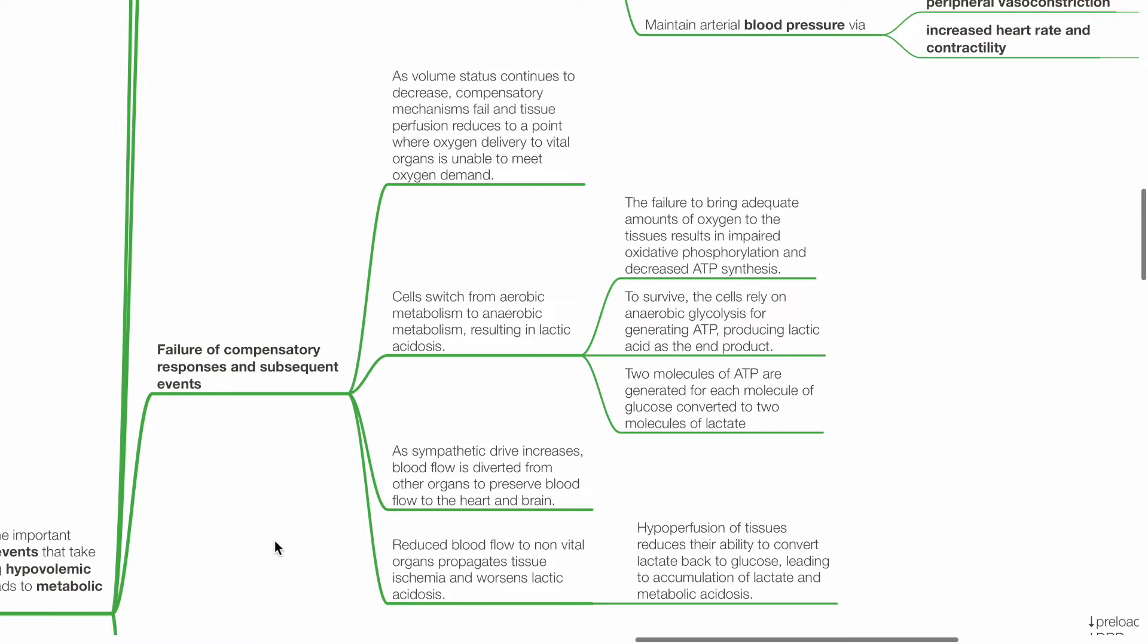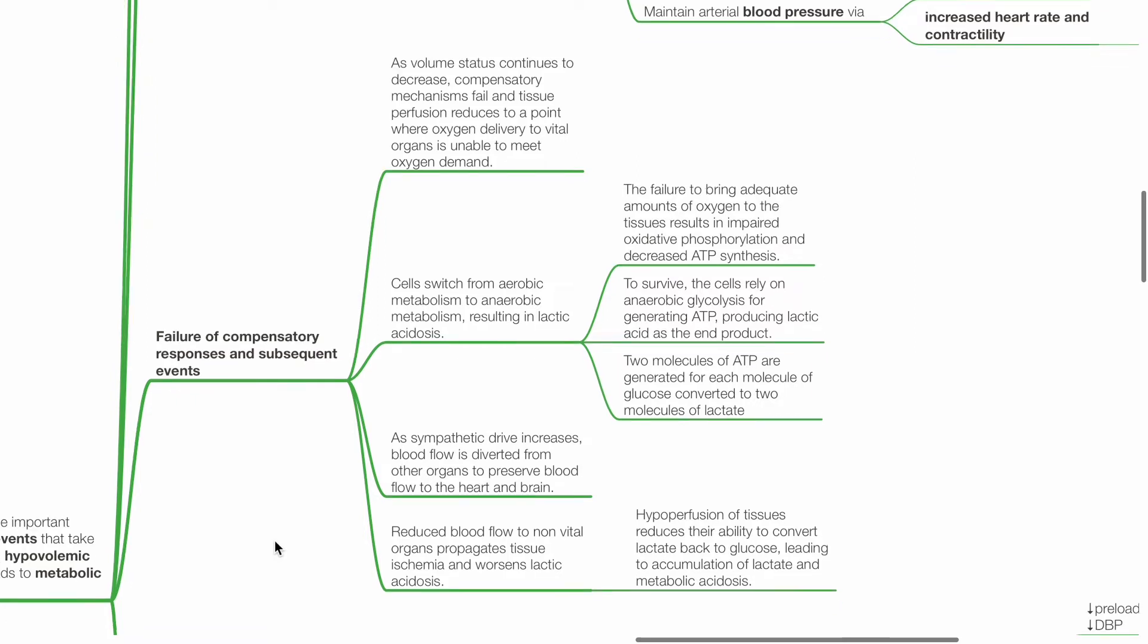To survive, cells rely on anaerobic glycolysis for generating ATP, producing lactic acid as the end product. Two molecules of ATP are generated for each molecule of glucose converted to two molecules of lactate. As sympathetic drive increases, blood flow is diverted from other organs to preserve blood flow to the heart and brain. Reduced blood flow to non-vital organs propagates tissue ischemia and worsens lactic acidosis. Hypoperfusion of tissues reduces their ability to convert lactate back to glucose, leading to accumulation of lactate and metabolic acidosis.